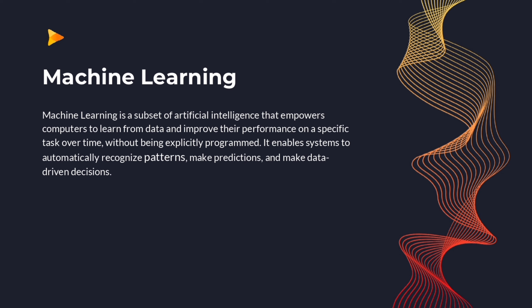Machine learning is a subset of artificial intelligence that empowers computers to learn from data and improve their performance on a specific task over time without being explicitly programmed. It enables systems to automatically recognize patterns, make predictions, and make data-driven decisions.